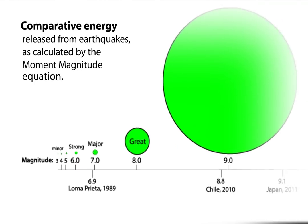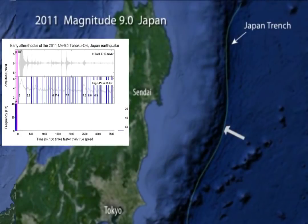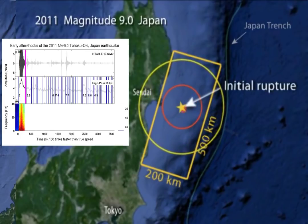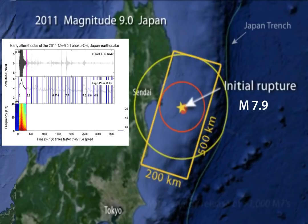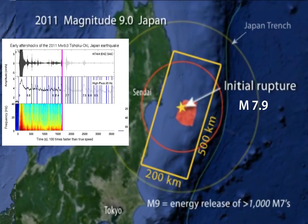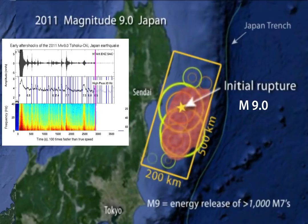Revised estimates of magnitude do not mean that the quakes were any less destructive. To complicate the initial magnitude picture, large earthquakes are not simply local fault breaks, but are often a cascading sequence of breaks along a long fault rupture. The Tohoku earthquake was initially reported as a magnitude 7.9. However, that was just the onset of a 500-kilometer-long rupture that was to continue for three minutes. It was quickly upgraded to a magnitude 8.8, then to an 8.9, and finally to a magnitude 9.